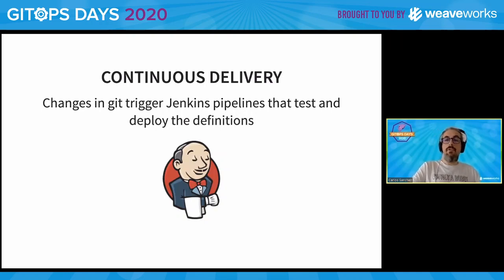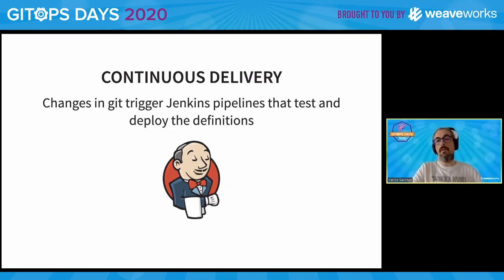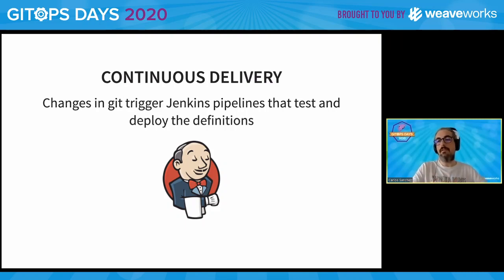And continuous delivery — every time something changes on Git, we get a Git commit, a Git event, and this triggers Jenkins pipelines that test and deploy these definitions. Pull requests also trigger pipelines, and the end result of these changes gets promoted to production and the different environments.